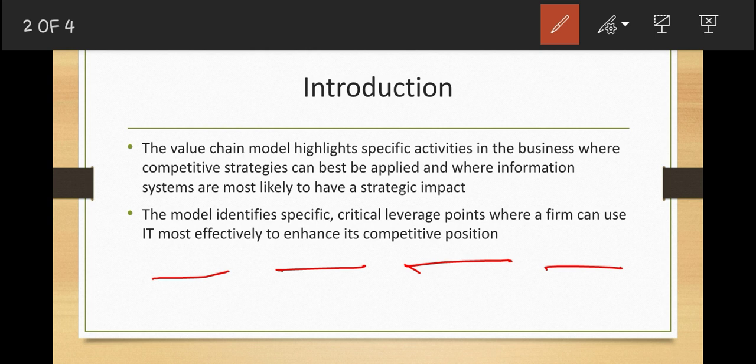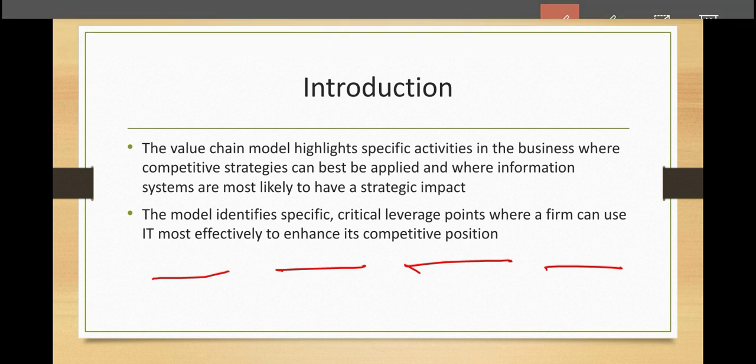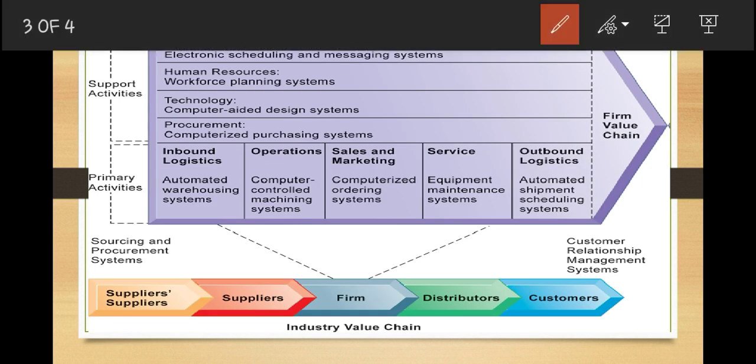The activities in the value chain model can be categorized as either primary activities or support activities. Primary activities are mostly directly related to the production and distribution of the firm's products and services, which actually create value for the customer. All those activities directly related to production and distribution are found under the category called primary activities.